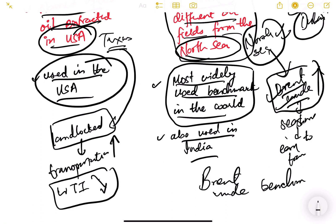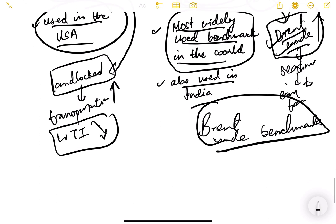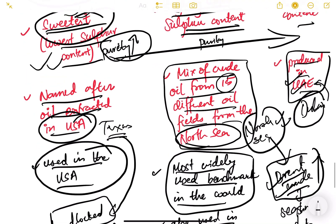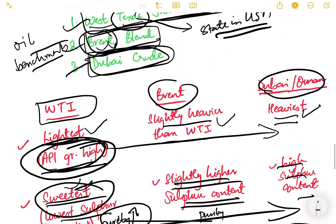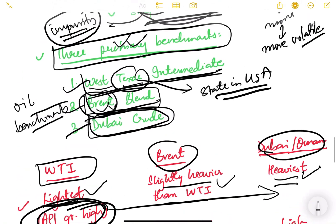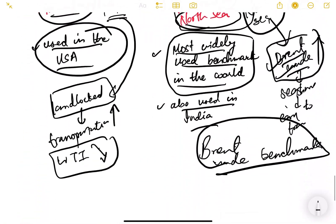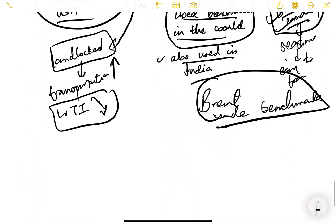I think this is sufficient to keep in mind. In this lesson we discussed two important topics in international economic policy — Double Taxation Avoidance Agreement and oil imports. We will continue in the next video. Thank you.